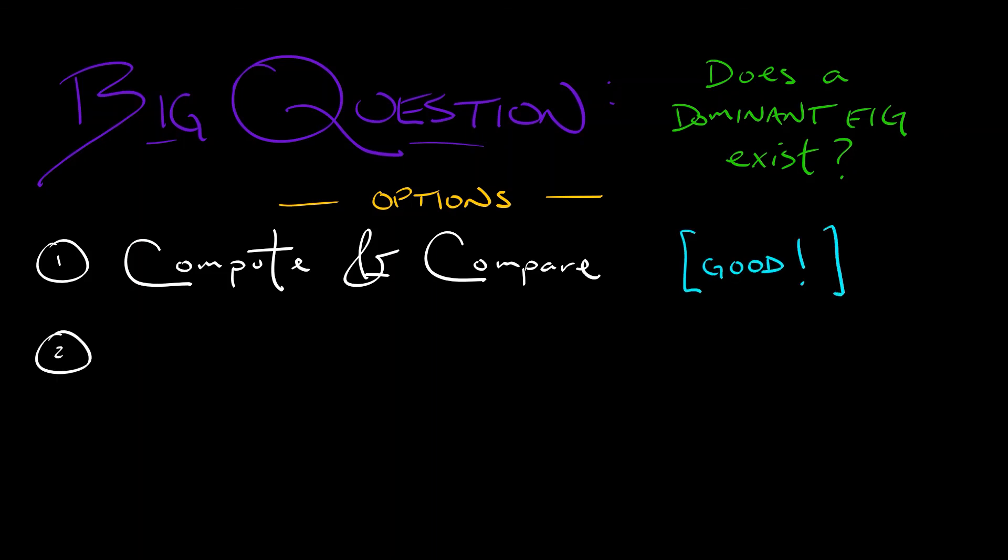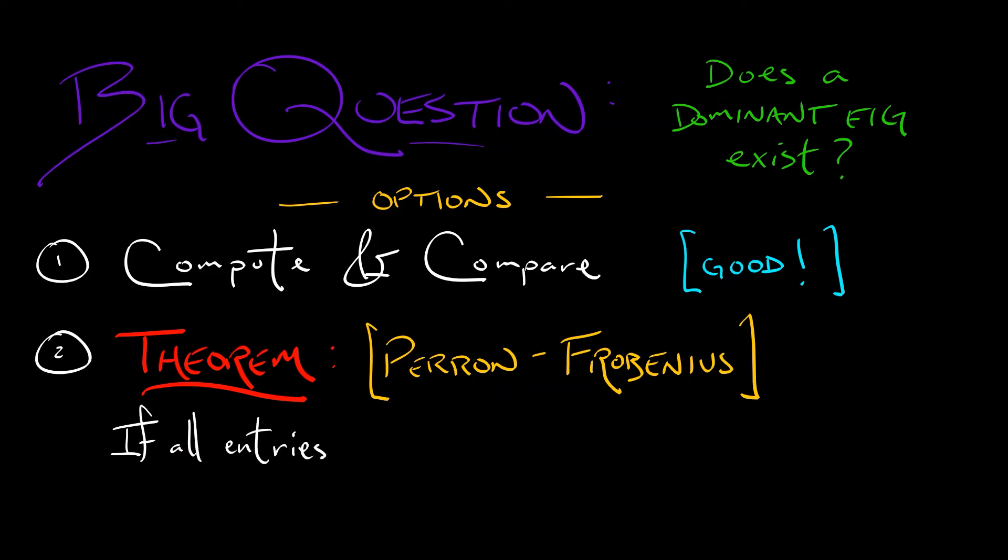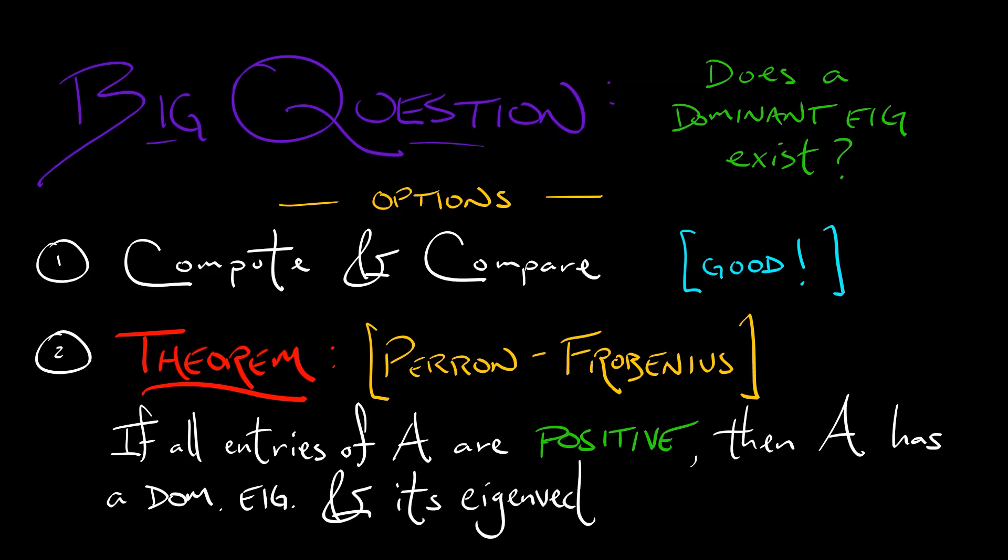Sometimes there are automatic guarantees. Here's a wonderful theorem from linear algebra. This is called the Perron-Frobenius theorem, and it says that if you have a square matrix A, all of whose entries are positive, strictly positive, then A has a dominant eigenvalue, and its eigenvector has all positive terms.